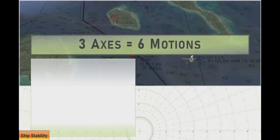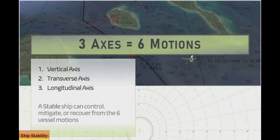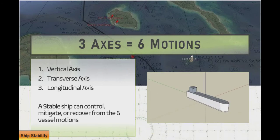To understand ship stability, we first have to really understand how a ship moves when confronted with external forces. Because the ship is three-dimensional, it has three axes of motion. These are the vertical axis, that would be this one here.